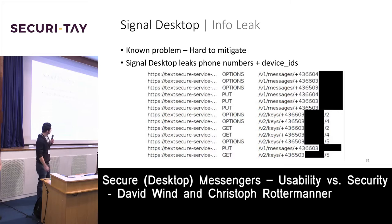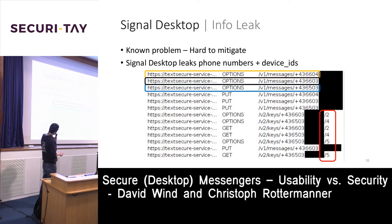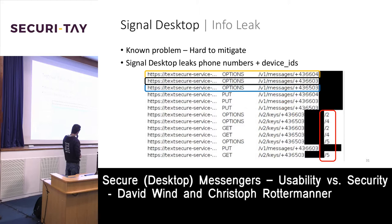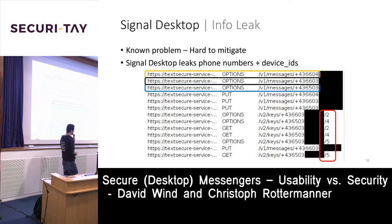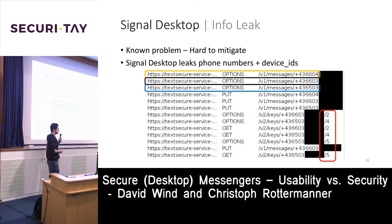For example, you can see one number has device IDs two, four, five; another has two, four; and one has only five. So you can say: this phone number has three devices linked, the first has two, the third has only one. And since device IDs are sequential like 1, 2, 3, 4, 5, you can infer that the last person has probably uninstalled the app four times and is now on their fifth attempt.